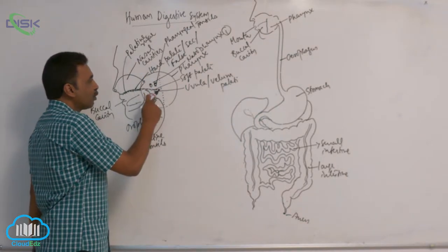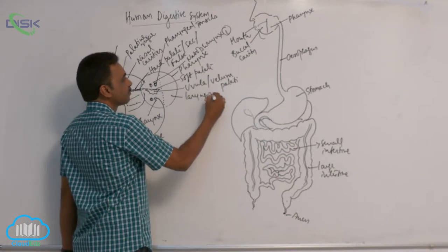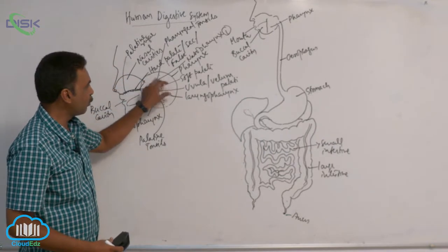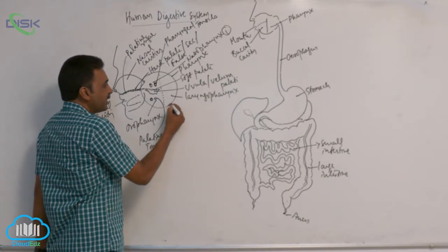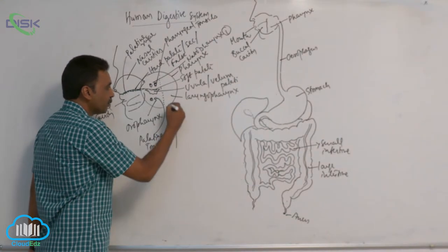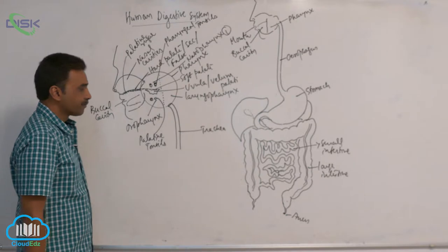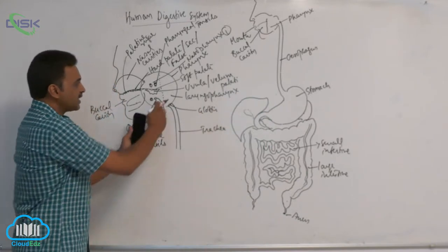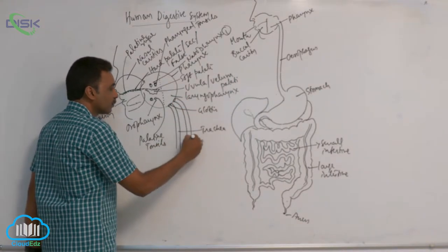The nasopharynx and oropharynx combinedly open into a common chamber called the laryngopharynx. At the anterior end of the laryngopharynx, there is a slit that opens into the trachea, called the glottis. Just behind the glottis, there is an opening into the esophagus.